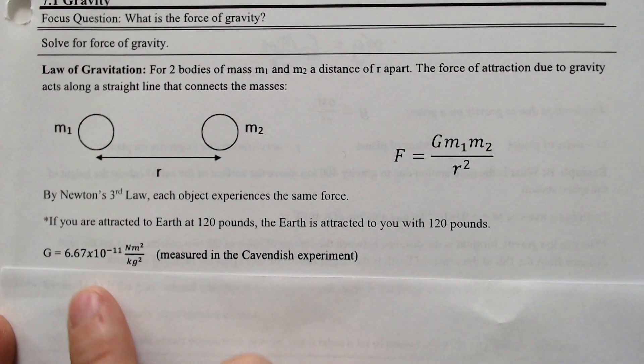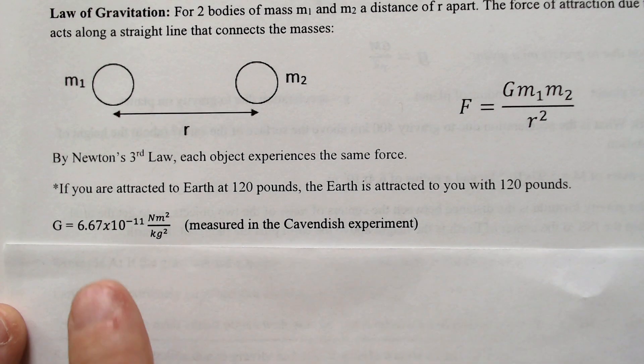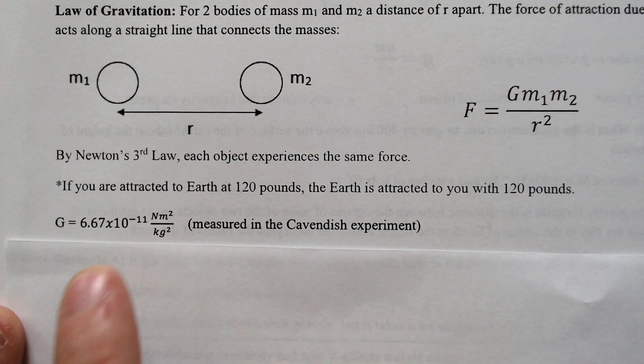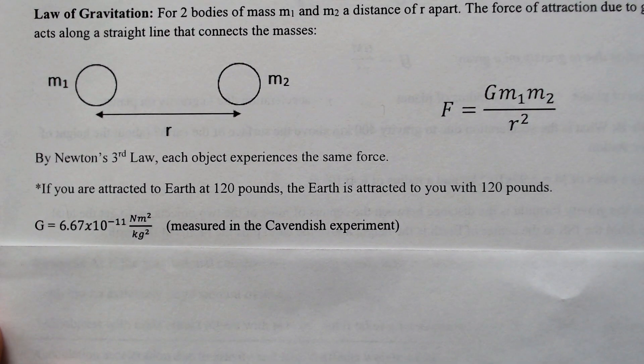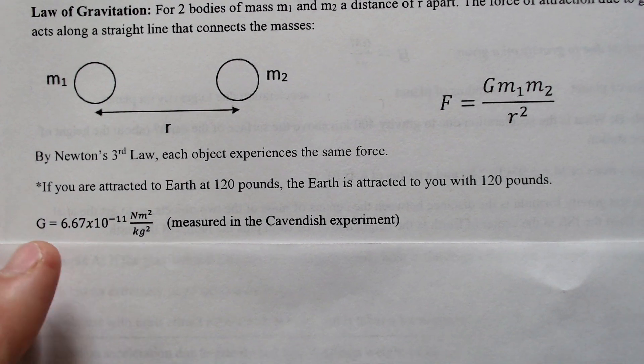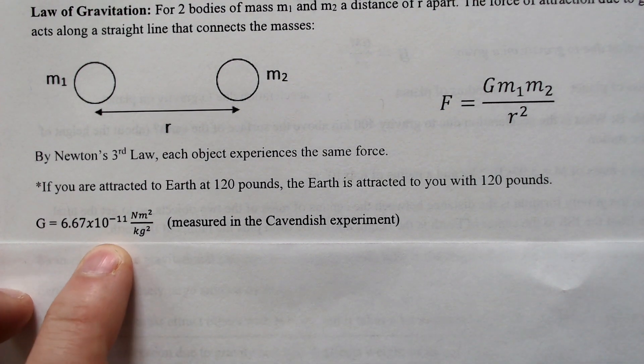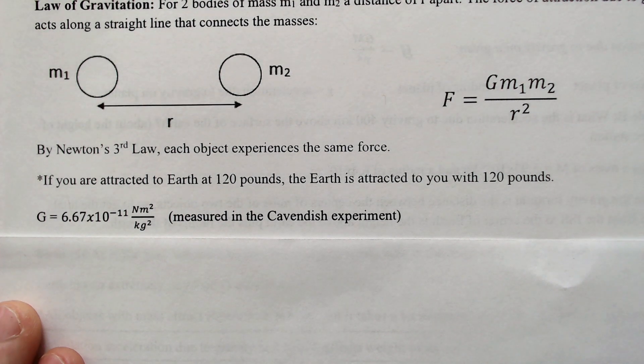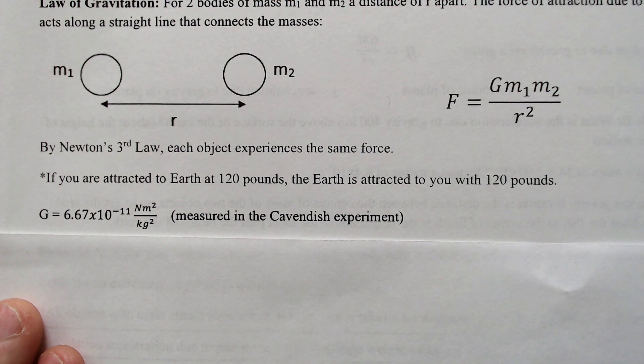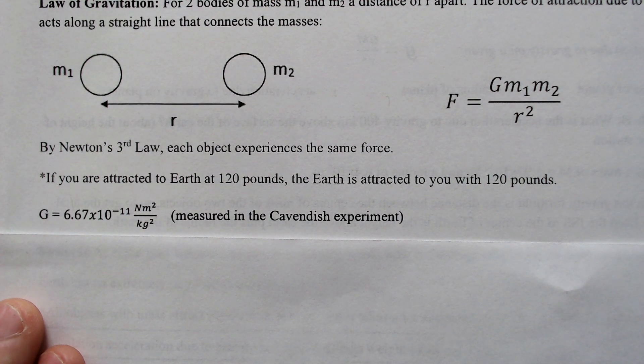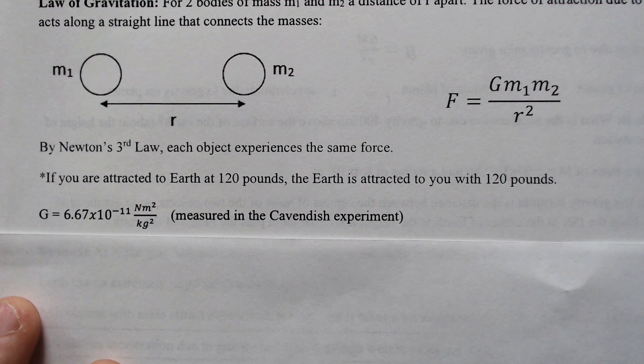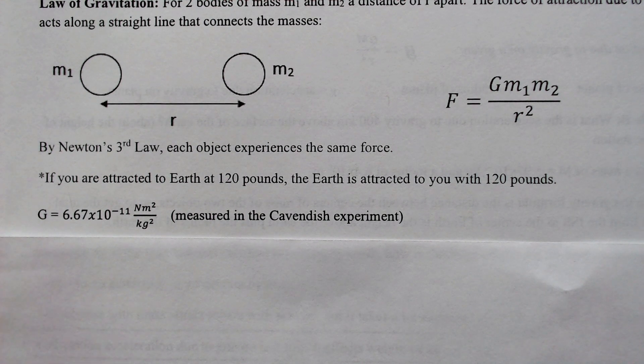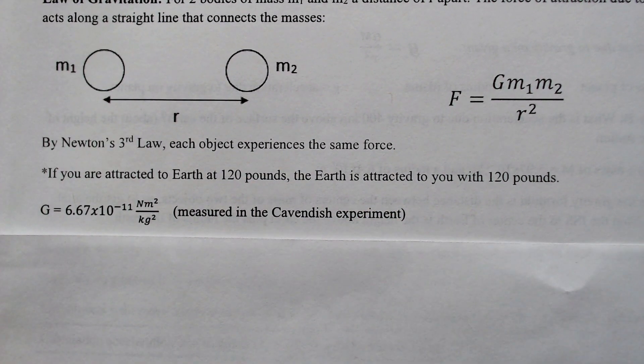Which is 6.67 times 10 to the negative 11th power. Take notice of that number. A lot of times you think gravity is this huge, overwhelming, powerful force, but 6.67 times 10 to the negative 11th power is a really small number. It actually has very little impact compared to some of the other forces, like atomic strong force and things like that, because magnetism even breaks gravity. So gravity is a small number in general, in terms of forces.